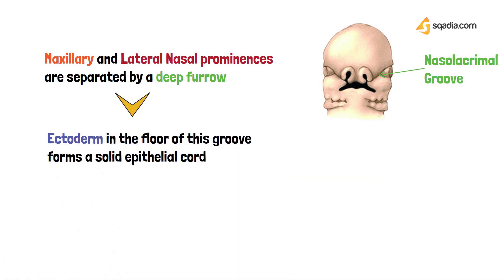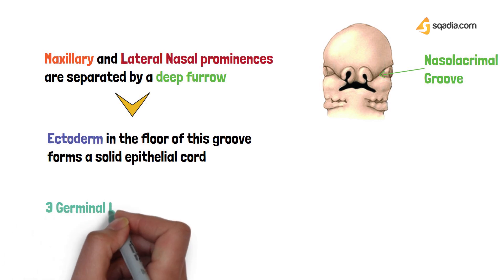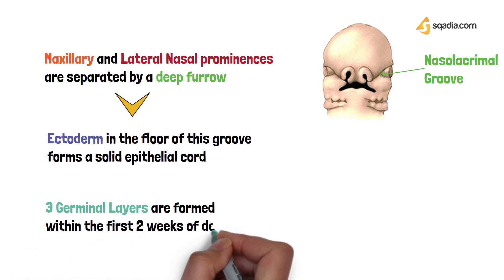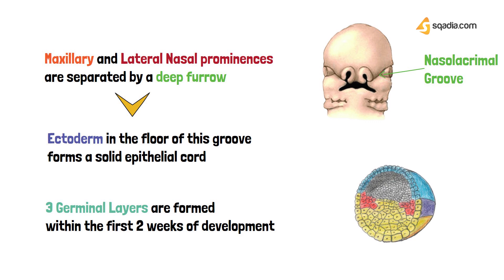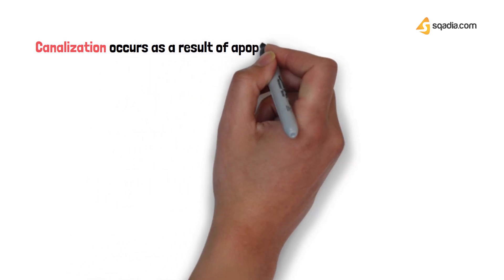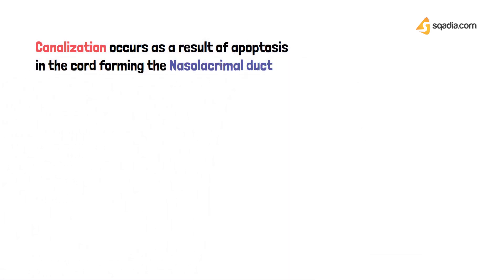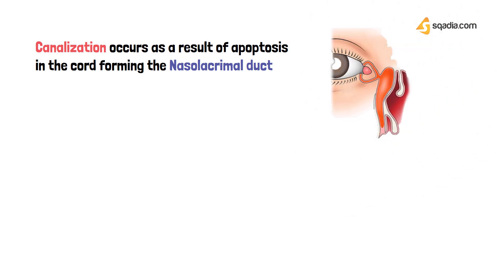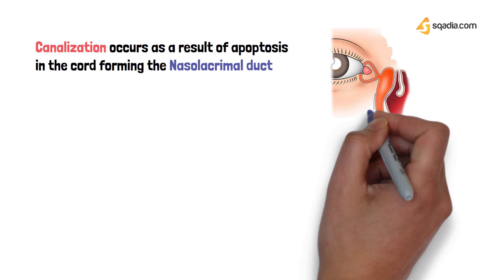The ectoderm present in the floor of this groove forms a solid epithelial cord. There are three germ layers present within the first two weeks of development: the ectoderm (outer layer), the mesoderm (inside), and the endoderm. Eventually, canalization occurs in the cord as a result of apoptosis, and it converts into the nasal lacrimal duct.